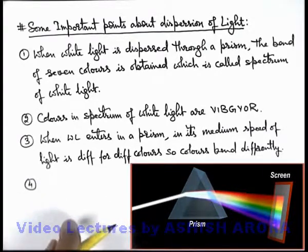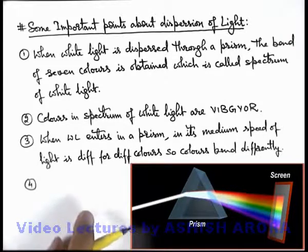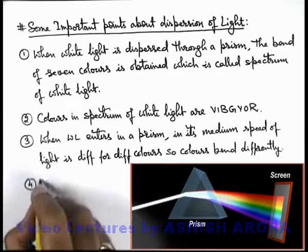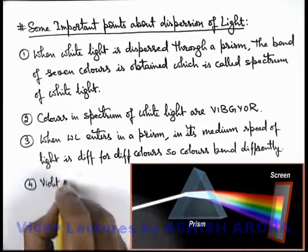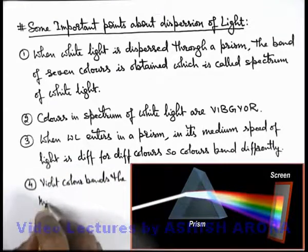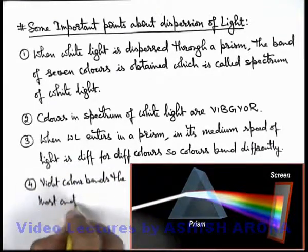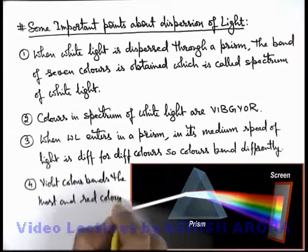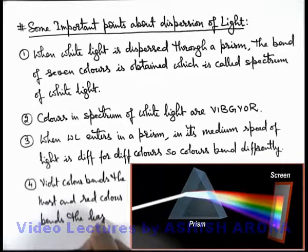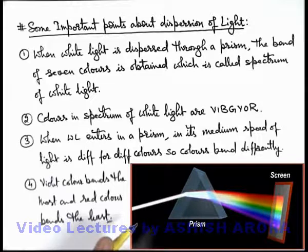White light is composed of 7 colors; it splits into colors, and due to the deviation of different colors in different directions, a spectrum is obtained. The point to notice is that violet color bends the most and red color bends the least. That is why in the spectrum obtained on the screen, red band is at the top and violet band is at the bottom.